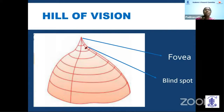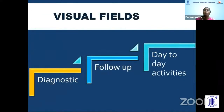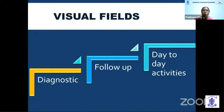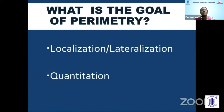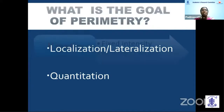Perimetry is the art of measuring the dimensions of the visual field. We do a visual field for diagnostic purposes — to diagnose a condition before neuro-imaging — or for follow-up to monitor disease progression, or to assess day-to-day activities and how far the patient can cope with field defects. The goal of perimetry is to help localize and lateralize the lesion and also to quantify the lesion.